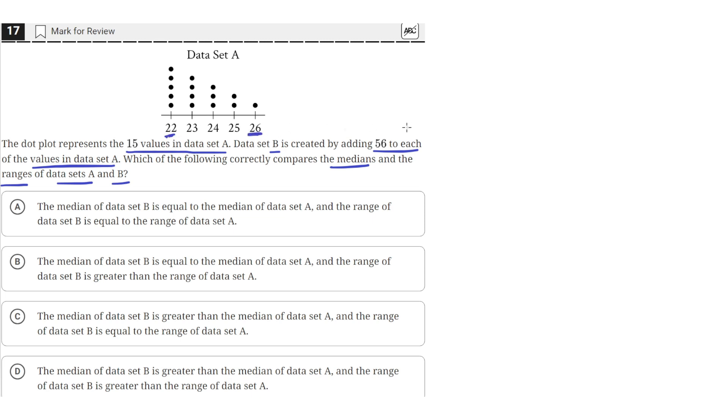Data set B, however, will be data set A, but each point or value has 56 added to it. So this 22 becomes 78 and this 26 will just be 56 larger as well.